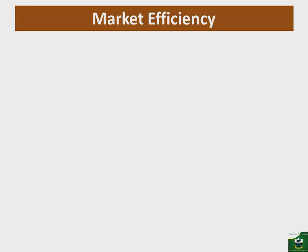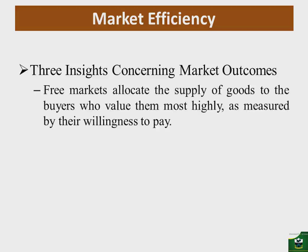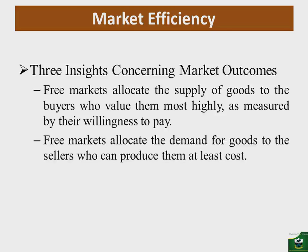We can now look at efficiency in the market. There are three things we observe from the market, especially in a free market economy. First, free markets allocate the supply of goods to the buyers who value them most, as measured by their willingness to pay. Those who are willing to pay are the ones who get most of the products supplied on the market.